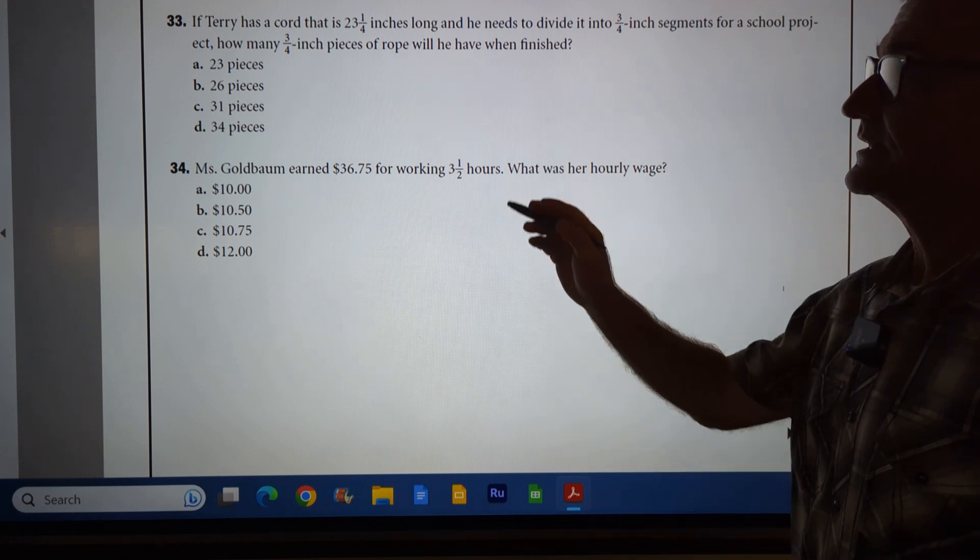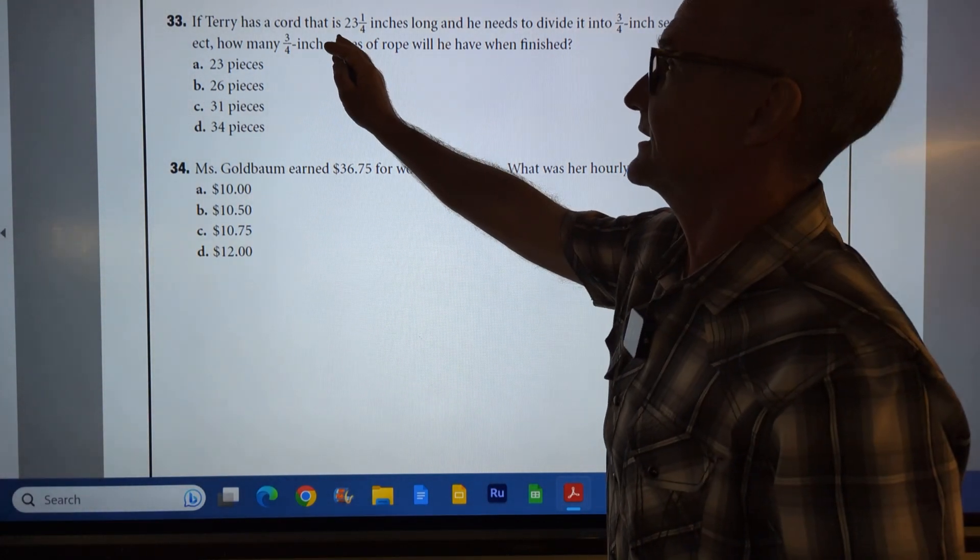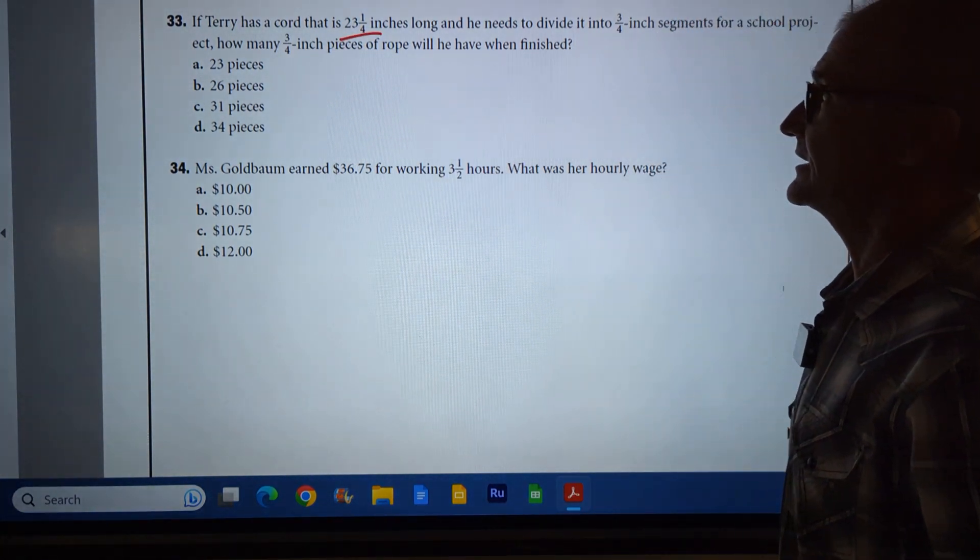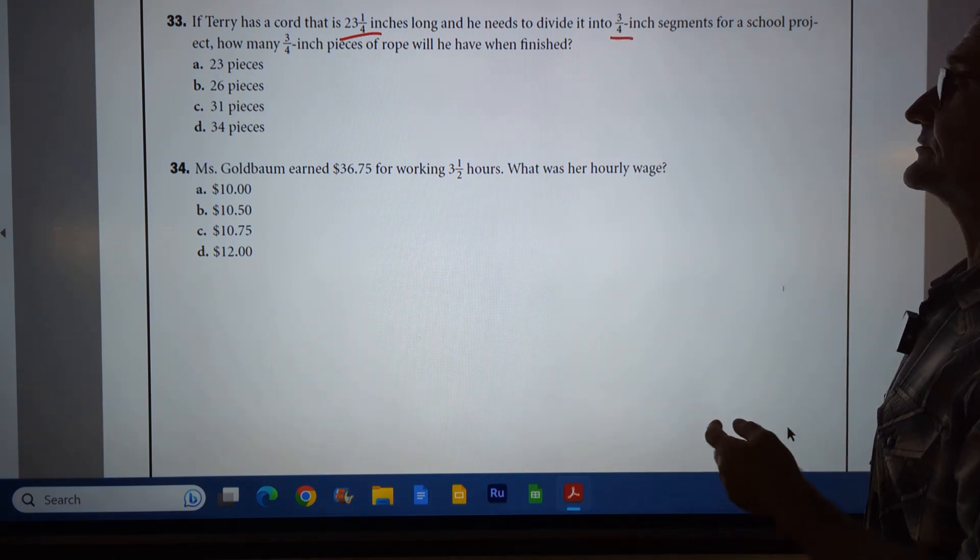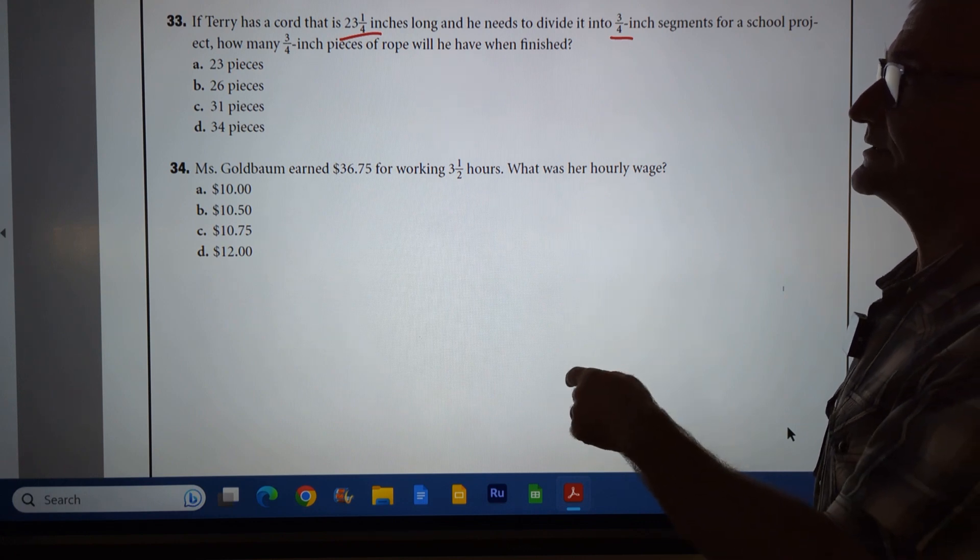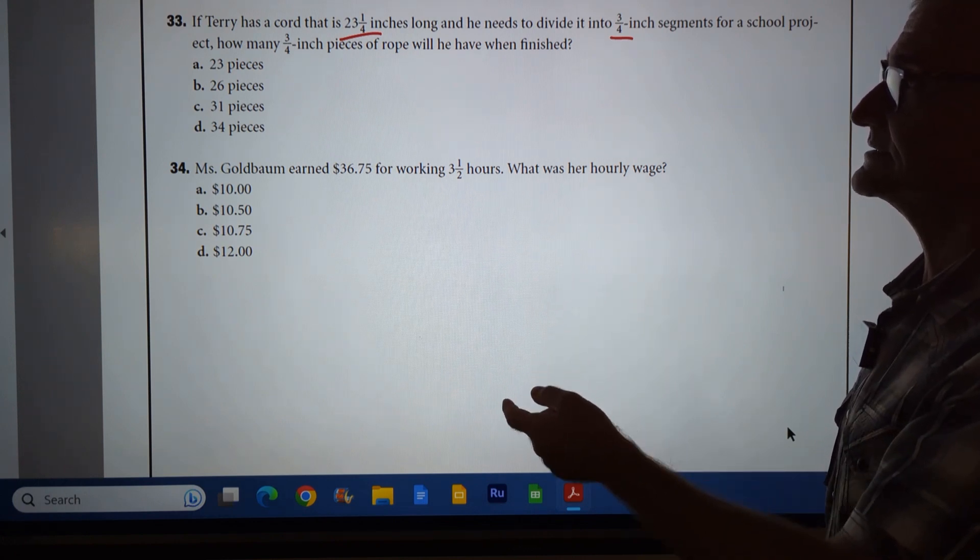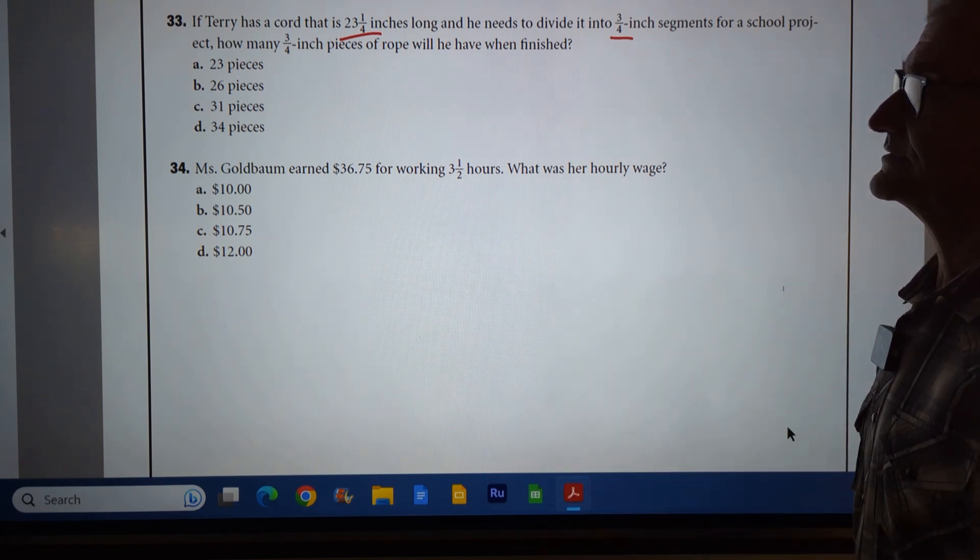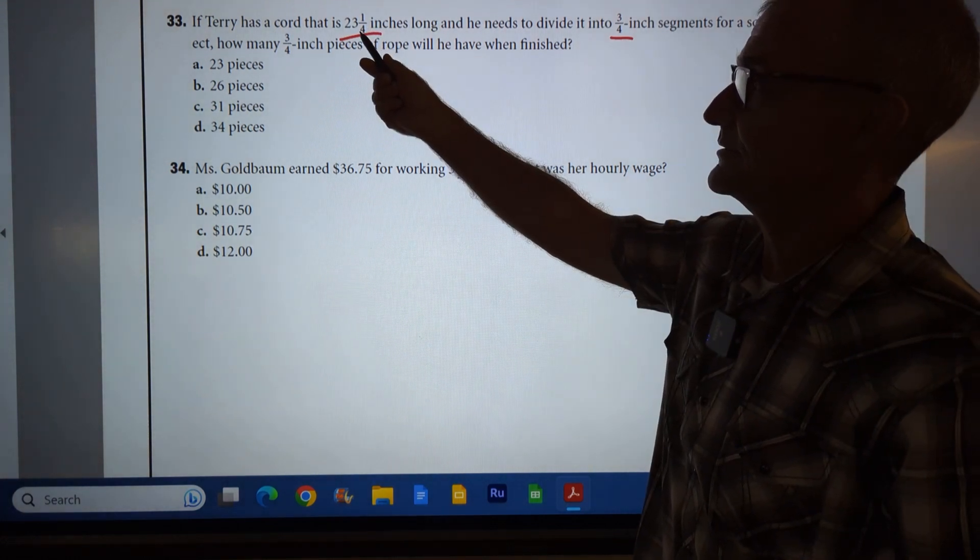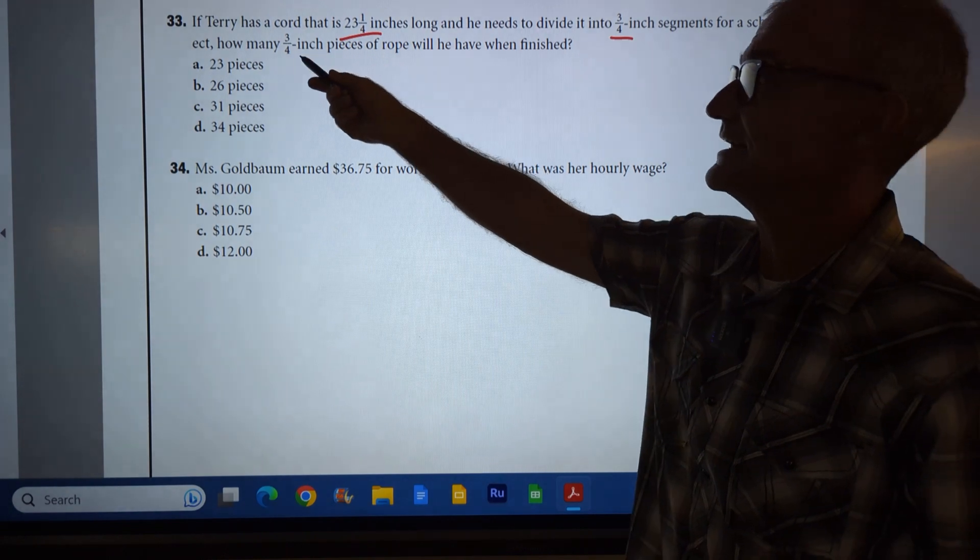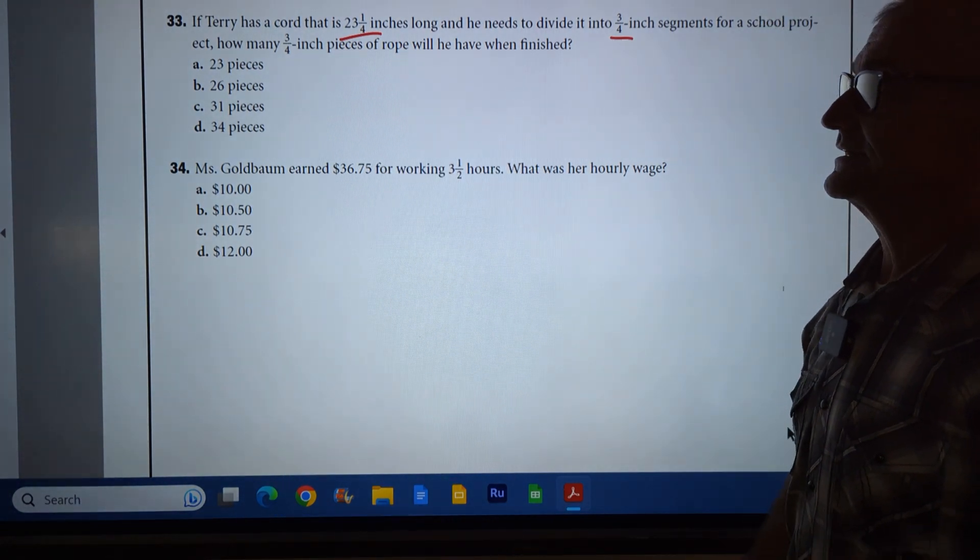Number 33. Terry has a cord that is 23 and a quarter inches long, and he needs to divide it into three-quarter-inch segments for a school project. How many three-quarter-inch pieces of rope will he have when he's finished? So I'm going to take that 23 and a quarter, and I'm going to divide it by three-quarters.